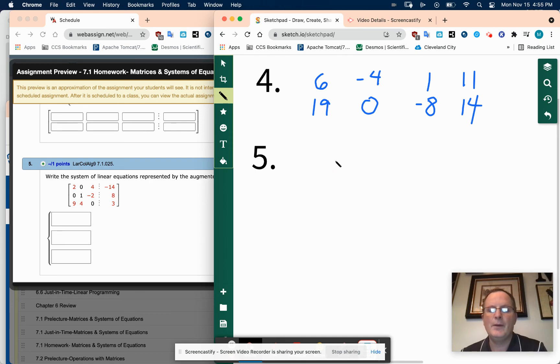All right, so the top equation will be 2X plus 4Z, there's no Ys, equals negative 14.